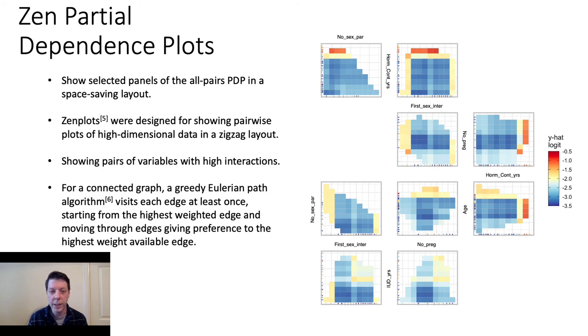We use a greedy Eulerian path algorithm to display variables with high interactions starting at the top and generally decreasing as you go down. This allows us to highlight influential variables in our model.